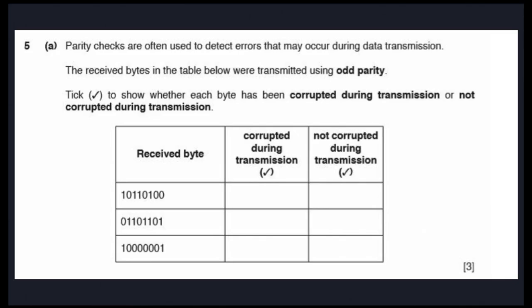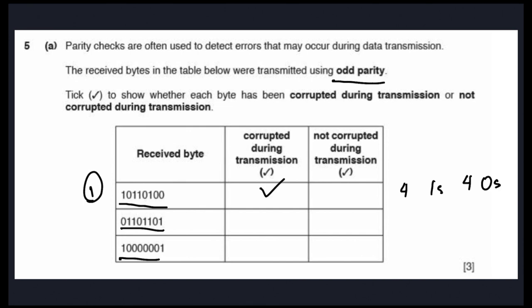Now let's look at practice questions. The first is a parity check question — we need to check whether values transmitted from one device to another have been corrupted, using the odd parity system, meaning the number of ones and zeros must each be odd. For the first value, we've got four ones and four zeros — both even — so there's definitely an error. For the second value, we've got five ones and three zeros — both odd — so that's good. For the third value, we've got two ones and six zeros — both even — so there's an error.